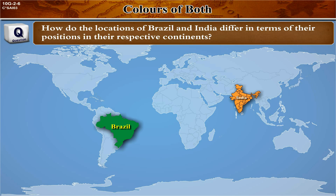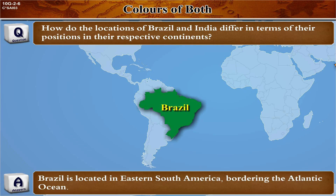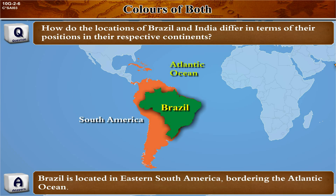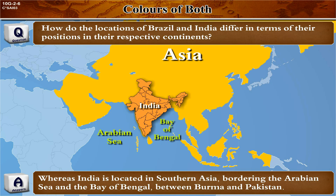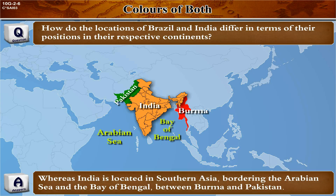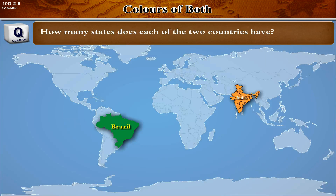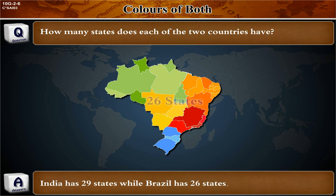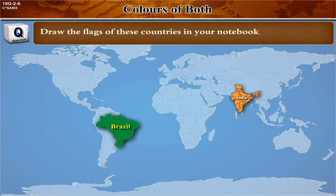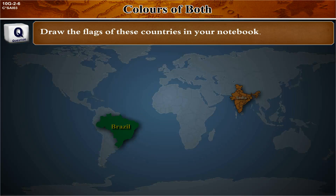How do the locations of Brazil and India differ in terms of their positions in their respective continents? Answer: Brazil is located in eastern South America bordering the Atlantic Ocean, whereas India is located in southern Asia bordering the Arabian Sea and the Bay of Bengal, between Burma and Pakistan. How many states does each country have? India has 29 states while Brazil has 26 states.